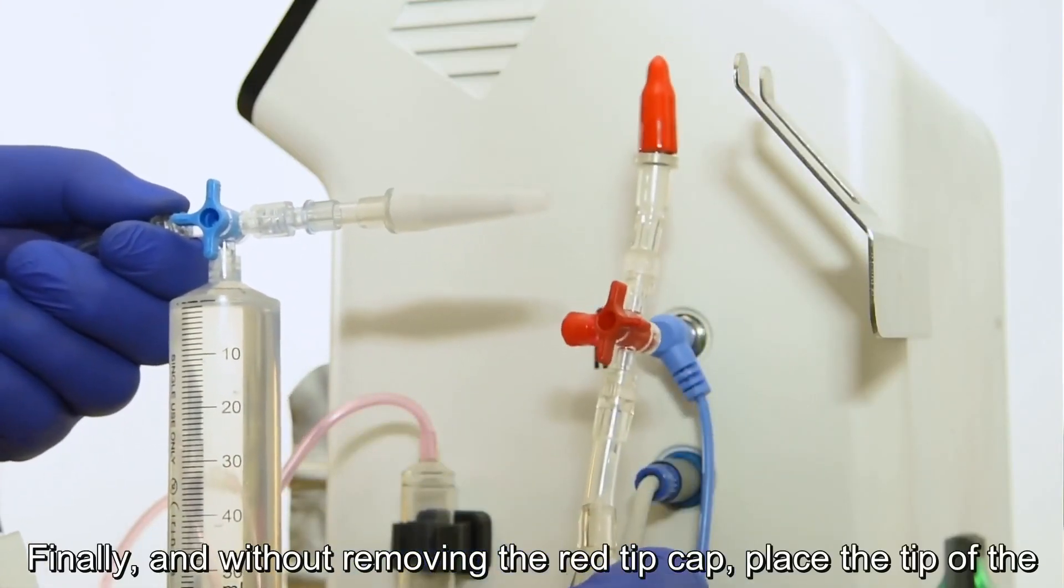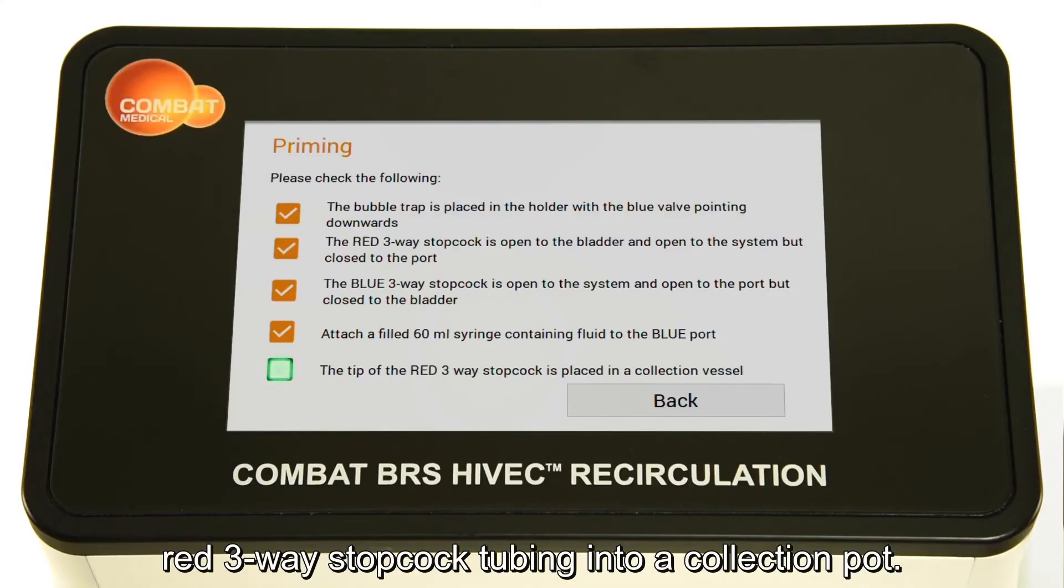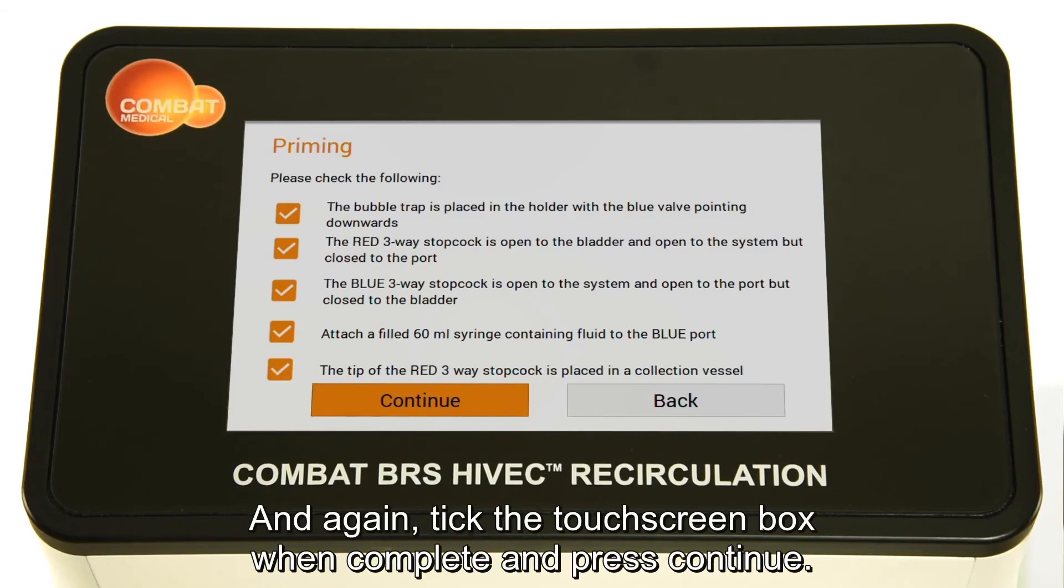Finally, and without removing the red tip cap, place the tip of the red three-way stopcock tubing into a collection pot. And again, tick the touch screen box when complete and press continue.